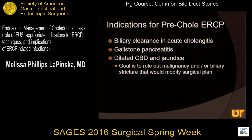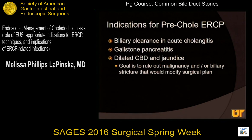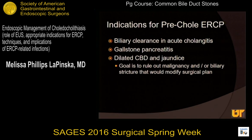Looking at my algorithm, having all of these tools in my armamentarium, indications I see for pre-cholecystectomy ERCP would specifically be biliary clearance in patients with acute cholangitis, especially with stones noted on imaging as the etiology. Also gallstone pancreatitis, because these patients are often quite ill and need supportive ICU care before they're able to have their cholecystectomy. Additionally, patients with a dilated common bile duct, jaundice, and stones if it would change your surgical management — specifically patients where findings raise suspicion for a biliary stricture, as stasis of bile can lead to formation of stones proximally, and if that biliary stricture would be a malignancy, this would change your management plan surgically.